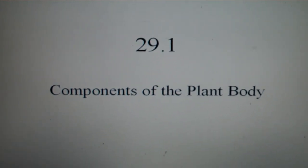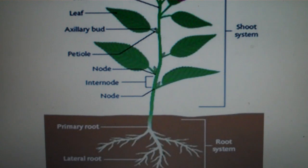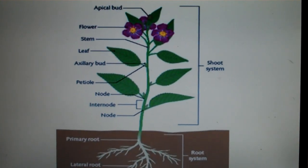29.1 components of the plant body. Now plants typically are made of two systems.